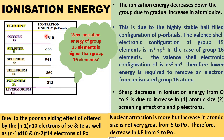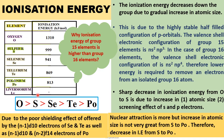A sharp decrease in ionization energy from oxygen to sulfur occurs due to the increase in atomic size and increase in the screening effect of S and P electrons. From sulfur to polonium, the decrease is due to increasing atomic size and poor shielding from (n-1) D10 and (n-2) F14 electrons. The order of ionization energy in the oxygen family is: O > S > Se > Te > Po.